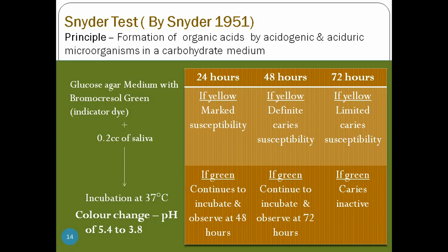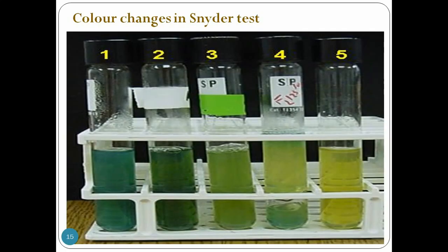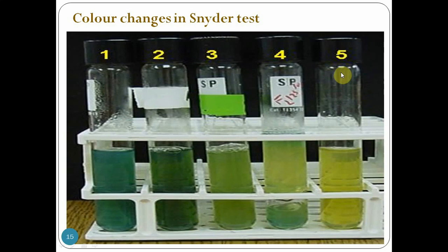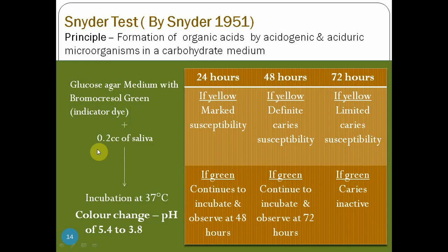We incubate up to 72 hours maximum; after 72 hours there is no point in testing as bacteria won't survive beyond that. This gives us an idea of the patient's caries susceptibility. The color scale shows tube number 1 as green at pH 5.4 and tube number 5 as yellow at pH 3.8.